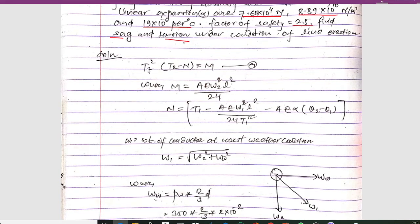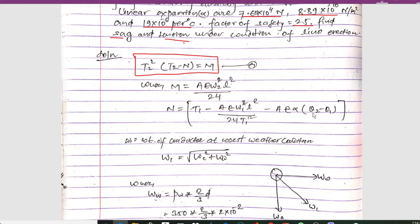Here we have the key relation: t2² × (t2 − n) = m, where m = AE·w2²·L² / 24, with A being the cross-section area, E the Young's modulus of elasticity, w2 the weight of conductor at fair conditions, and L the span length. Similarly, n = t1 − AE·w1²·L² / (24·t1) − AE·α·(θ2 − θ1), where t1 is the tension and w1 is the weight at worst weather conditions.